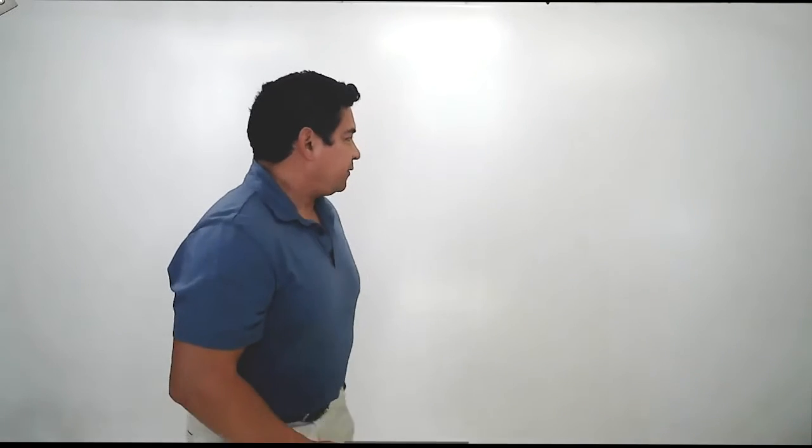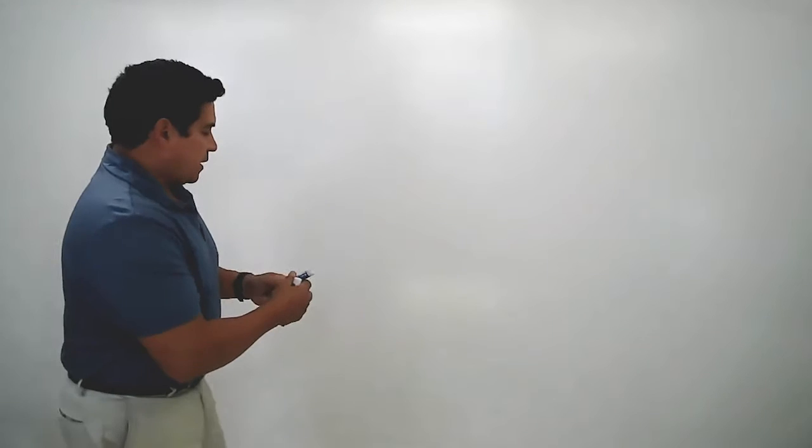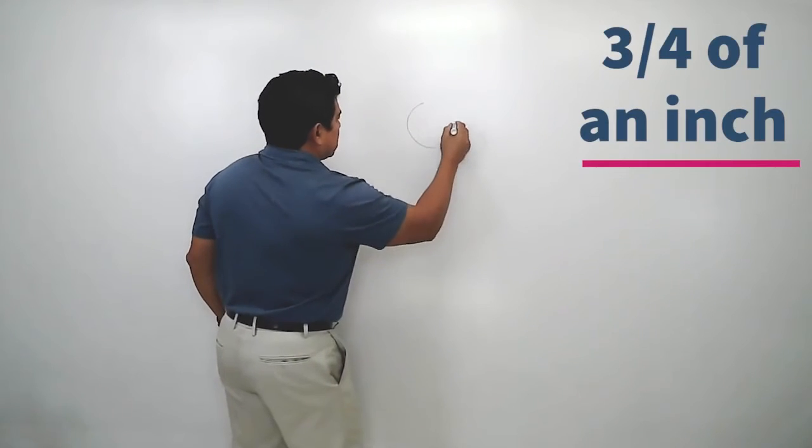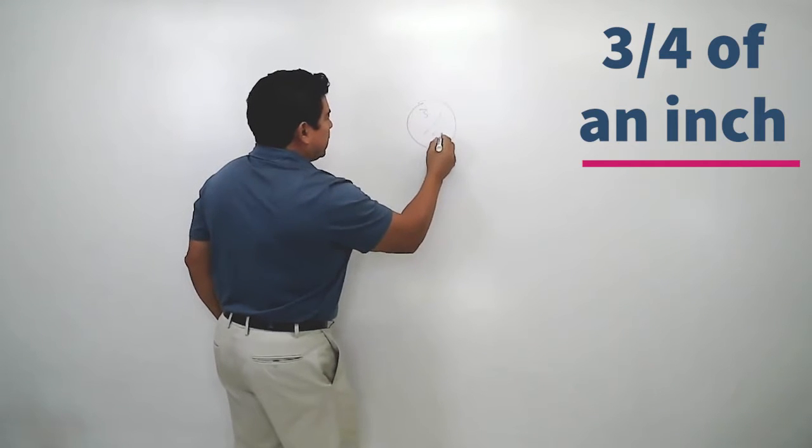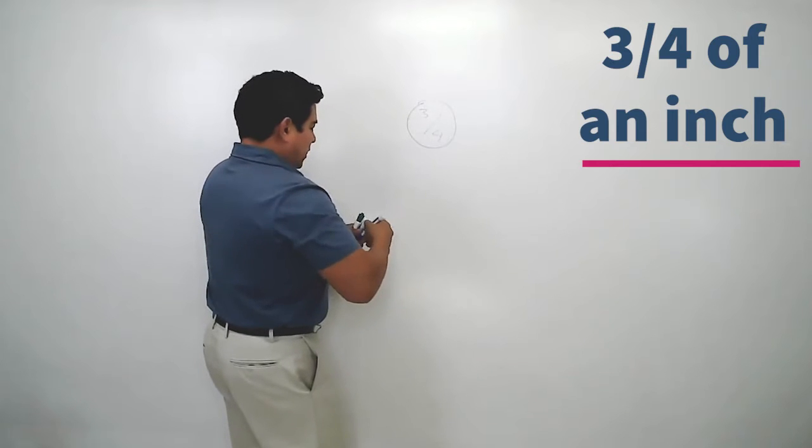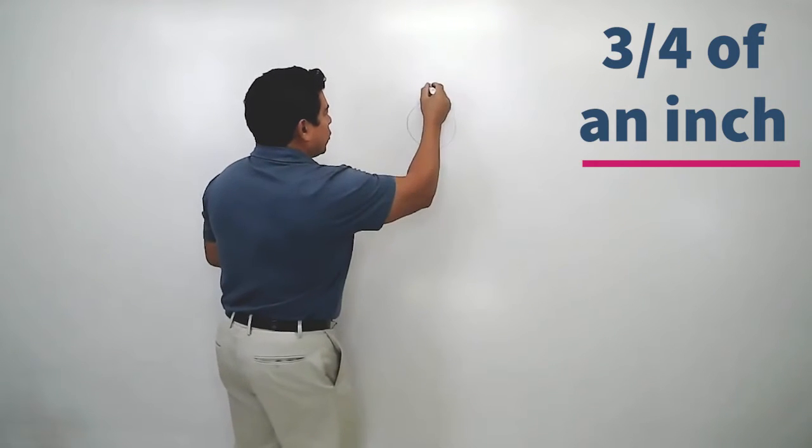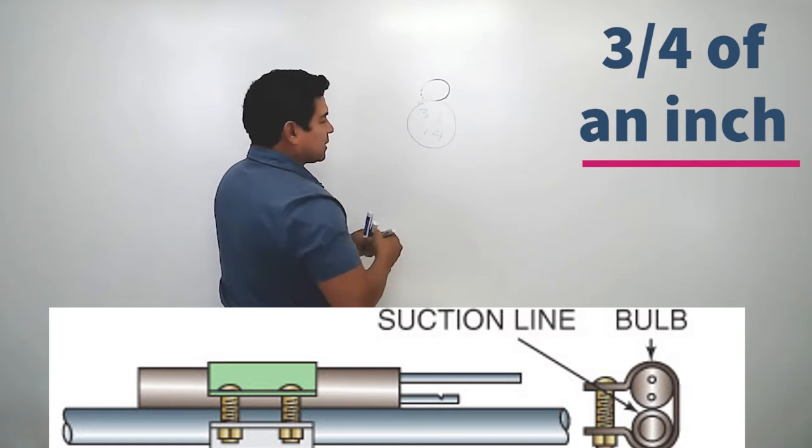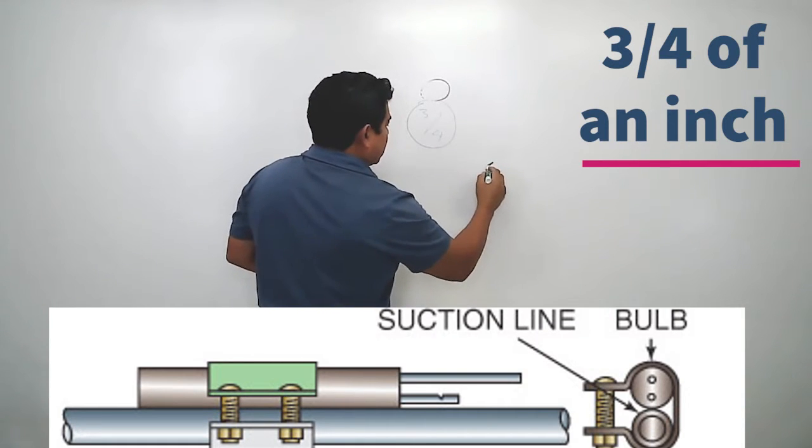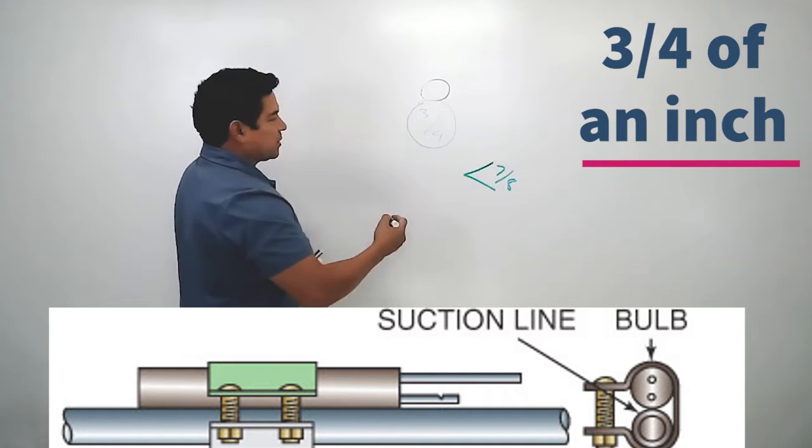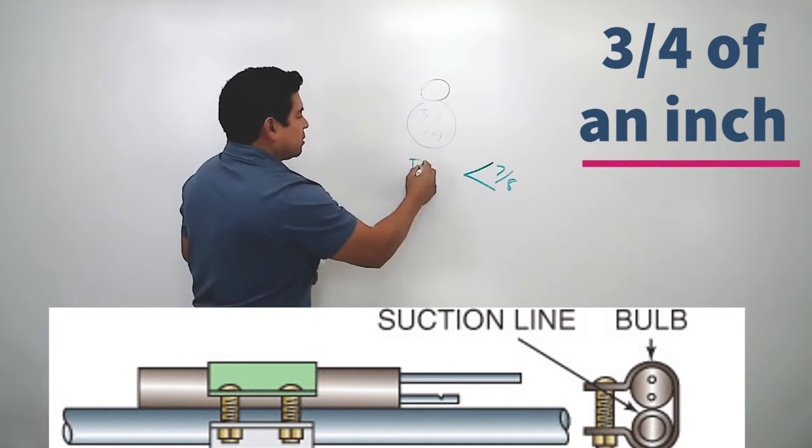One is that if we have a suction line that happens to be, let's say, three quarters of an inch, then the sensing bulb is going to have to be up on top. Rule of thumb says that if the line is smaller than seven eighths, then it needs to be on top.